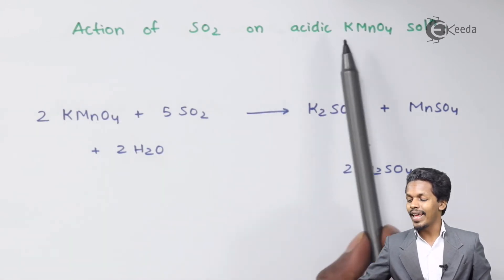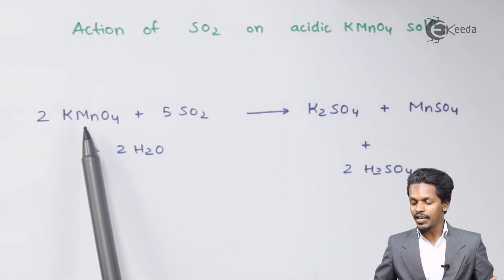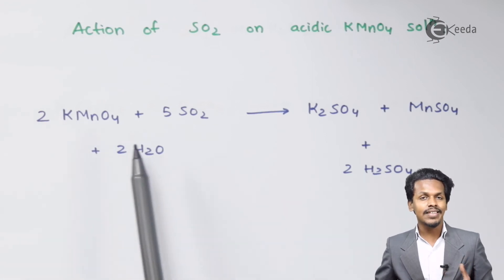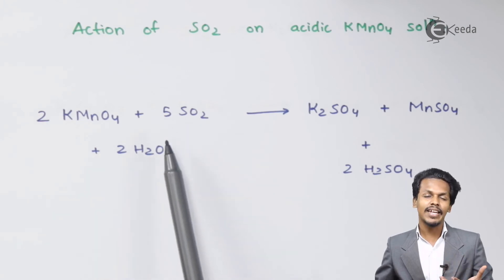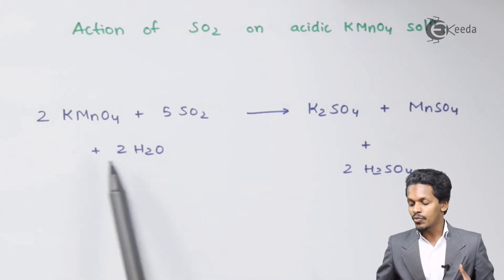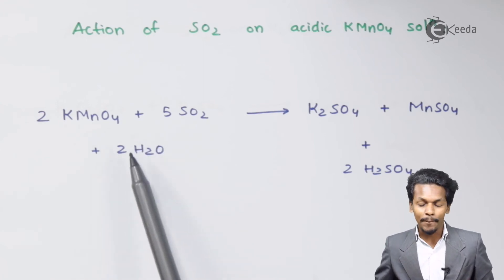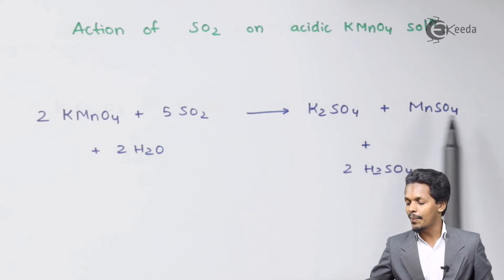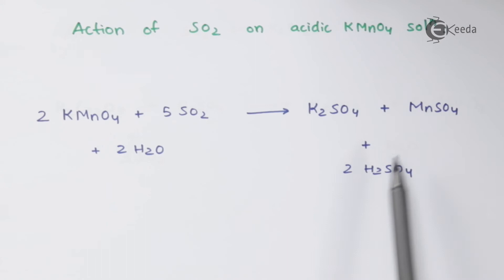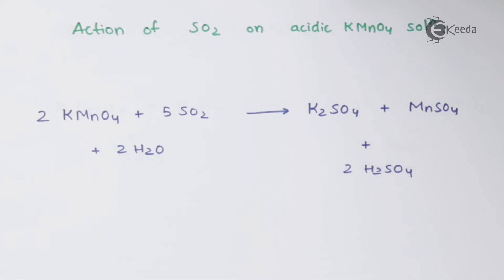The next is the action of SO2 on acidic KMnO4 solution. When 2 moles of KMnO4 is reacted with 5 moles of SO2 and 2 moles of H2O, the products are K2SO4 (potassium sulfate), MnSO4 (manganese sulfate), and 2 moles of H2SO4. Here potassium permanganate acts as the oxidizing agent, similar to the previous reaction with potassium dichromate.